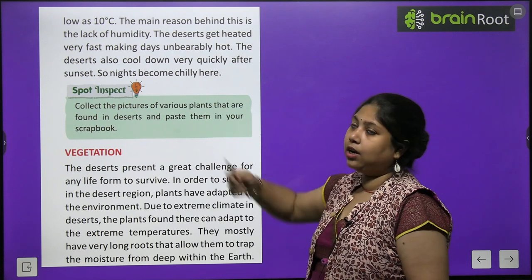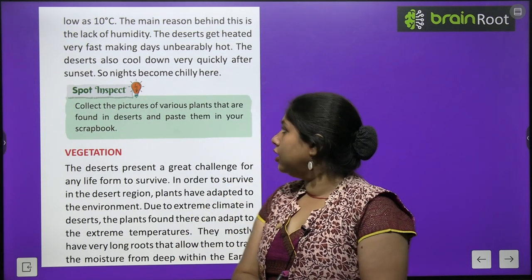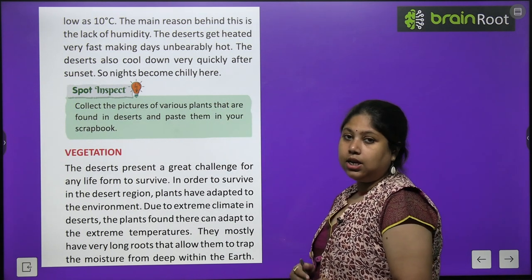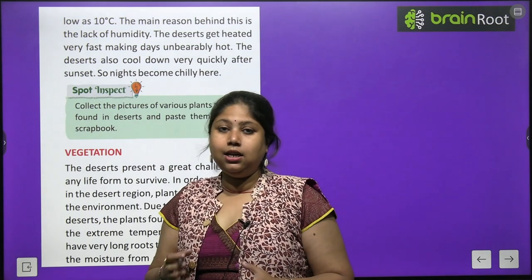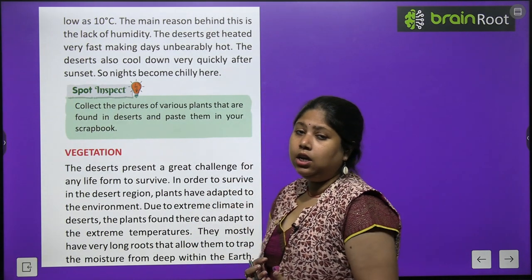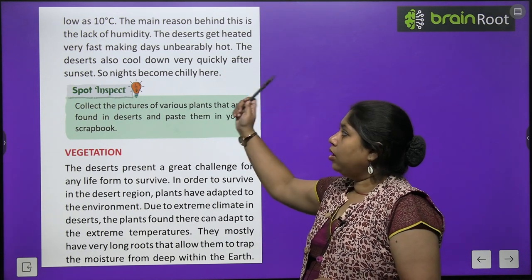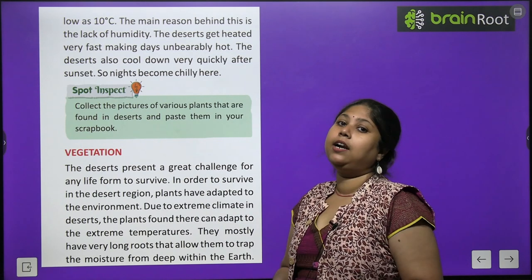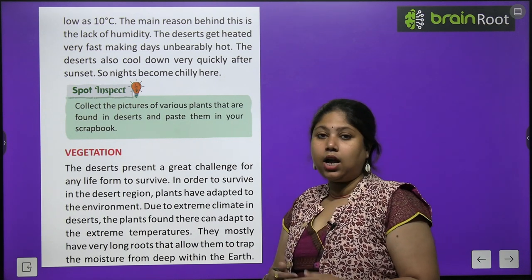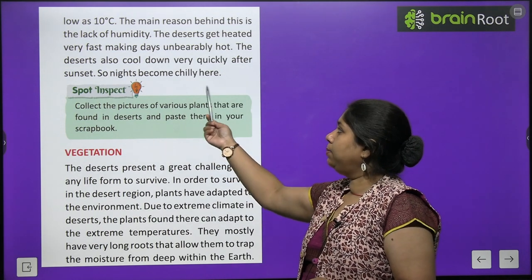The main reason behind extreme temperature variation is the lack of humidity. Deserts get heated very fast, making days unbearably hot — temperature itna high rise ho jaata hai ki log yahan garmi sehen nahi paate. Opposite to this, deserts cool down very quickly as the sun sets, and nights become quite chilly here.